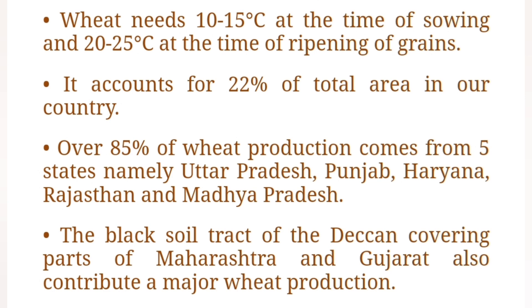The black soil tract of the Deccan, covering parts of Maharashtra and Gujarat, also contributes major wheat production.